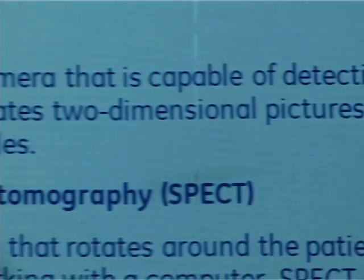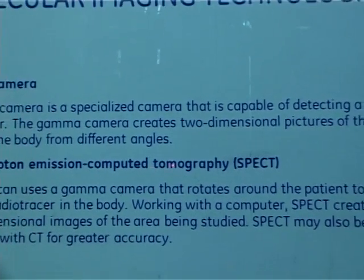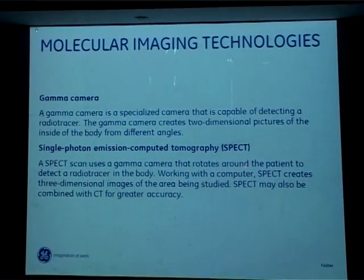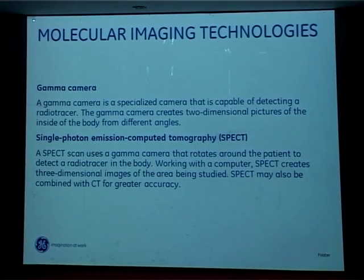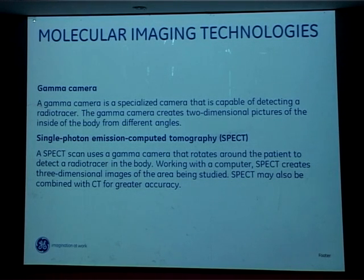What exactly is a gamma camera? The gamma camera has been with us for almost half a decade. The first gamma camera was built by Hal Anker in the 1950s, and it can never go obsolete because many procedures are still fully done on a gamma camera today. It is a specialized camera capable of detecting a radiotracer and creates 2D pictures of the inside of the body from different angles. SPECT uses a gamma camera that rotates around the patient to detect a radiotracer in the body, and working with a computer, SPECT creates 3D images of the areas being studied. SPECT may also be combined with CT for greater detail.